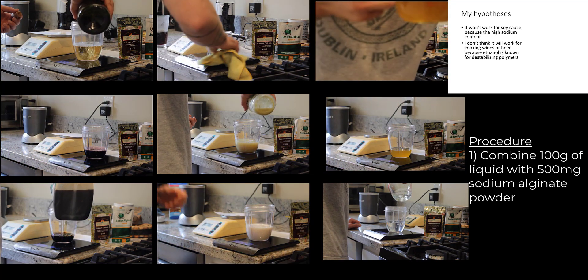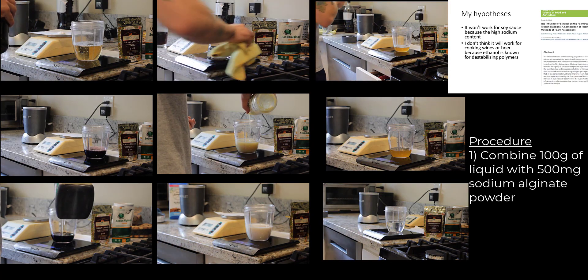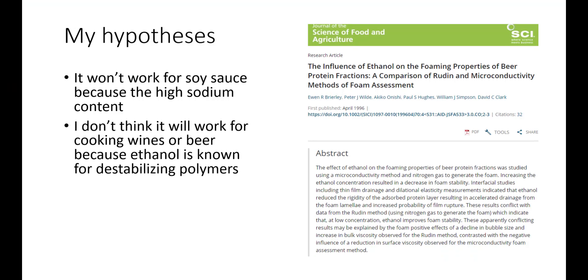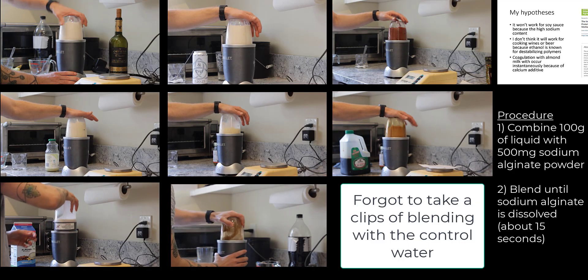I also don't think this is going to work for either of the wines or beer, and this is because I know that ethanol is known for destabilizing a lot of polymeric structures. If you look at this article out of the Journal of Science of Food and Agriculture, increasing ethanol content means destabilizing beer foam, and beer foam is also a type of weak polymer.